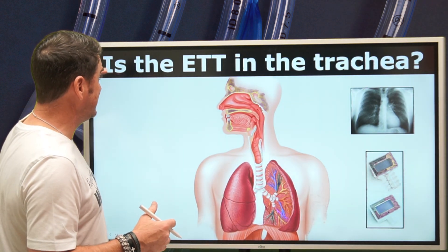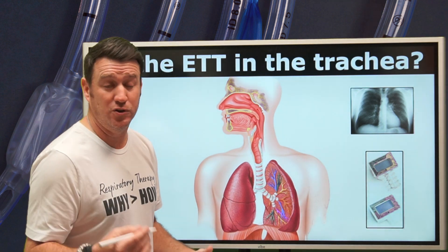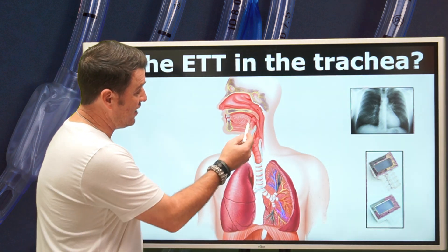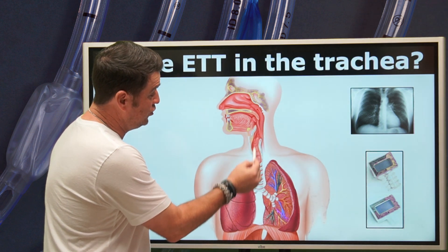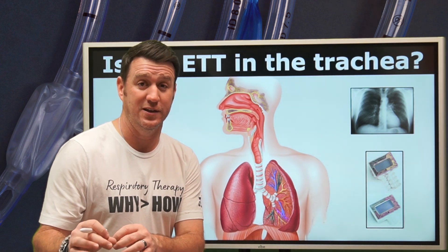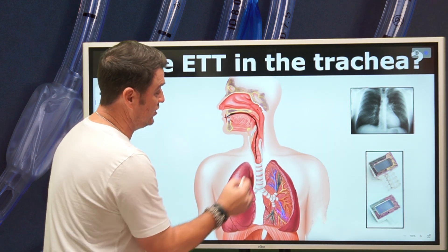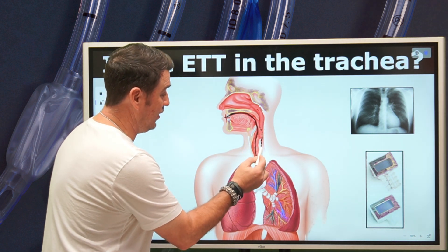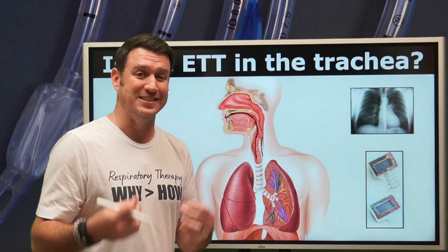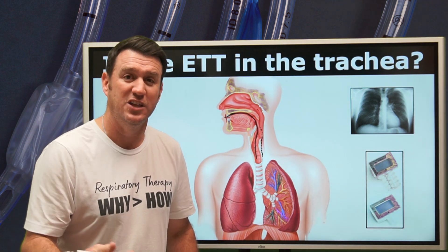The first question is: is the endotracheal tube in the trachea? During intubation, we take an artificial airway and insert it through the patient's oral cavity, down through the larynx, and into the trachea. Sometimes, however, the tube can accidentally be placed in the esophagus. If it ends up in the esophagus, you're going to have an airway designed to help patients ventilate and oxygenate that's instead delivering to the stomach — not a good outcome.